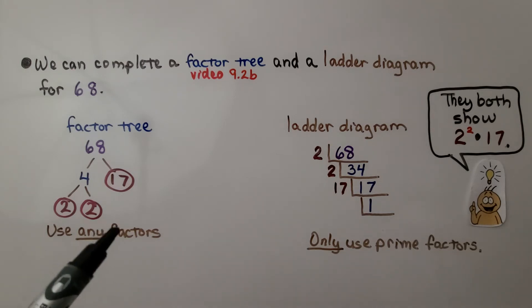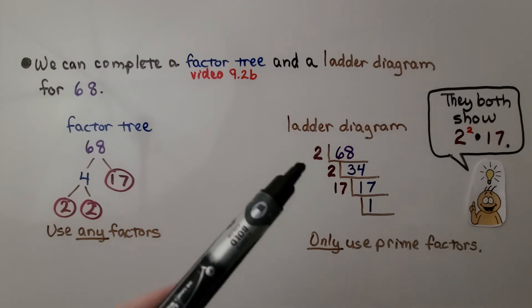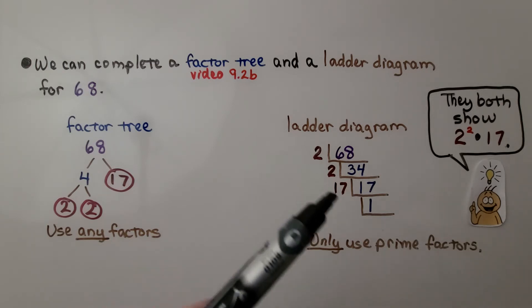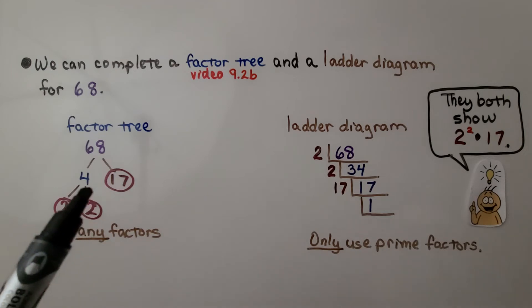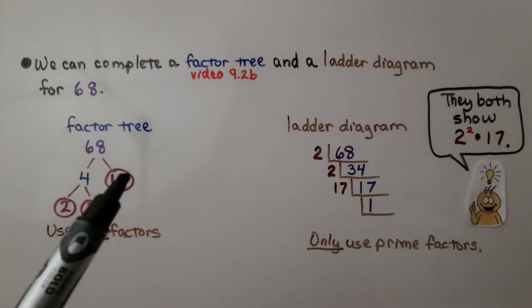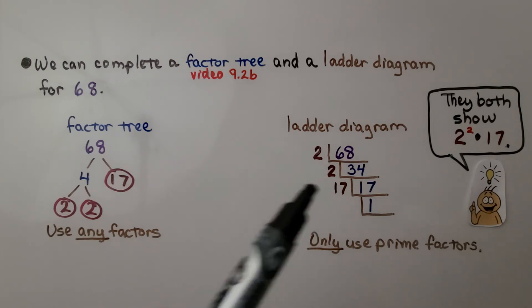In the factor tree, we can use any factors. In the ladder diagram, we can only use prime factors on the left. But they both show 2 raised to the second power times 17. We have 2 twos, so that's 2 raised to the second power times 17. They show the same answer.